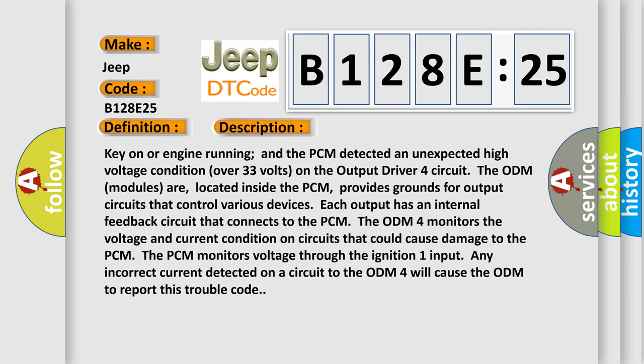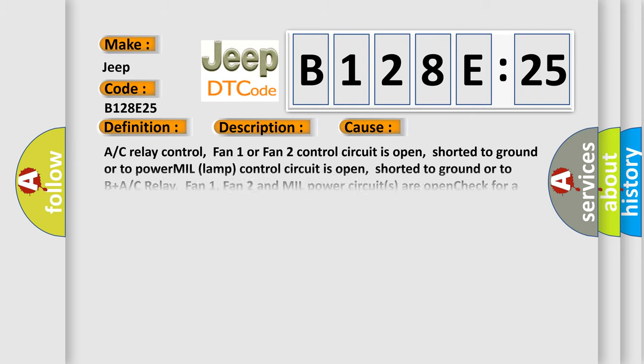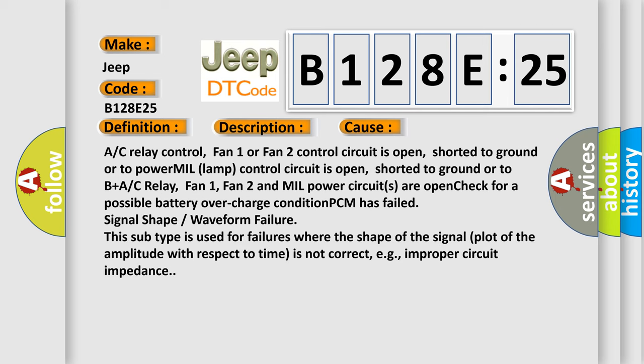This diagnostic error occurs most often in these cases: A/C relay control, fan 1 or fan 2 control circuit is open, shorted to ground or to power, MIL lamp control circuit is open, shorted to ground or to B plus A/C relay. Fan 1, fan 2 and MIL power circuits are open, check for a possible battery overcharge condition. PCM has failed.